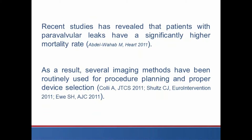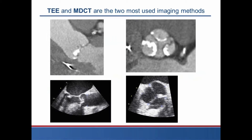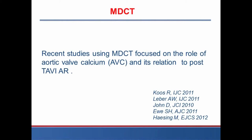Recent studies have revealed that patients with paravalvular leaks have a significantly higher mortality rate. As a result, several imaging methods have been routinely used for procedure planning and proper device selection. Transesophageal echo and CT scans are the most used imaging methods to evaluate calcification of the aortic valve and annular dimensions. Recent studies using CT scans focus on the role of aortic valve calcium and its relation to post-implantation transcatheter aortic valve aortic regurgitation.